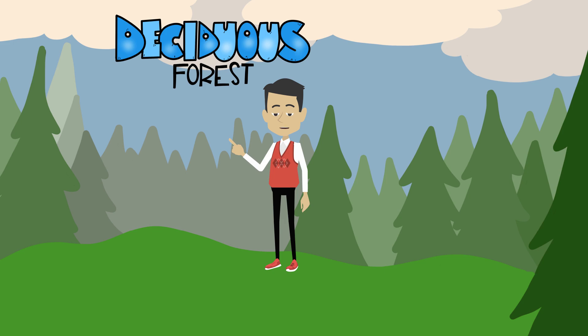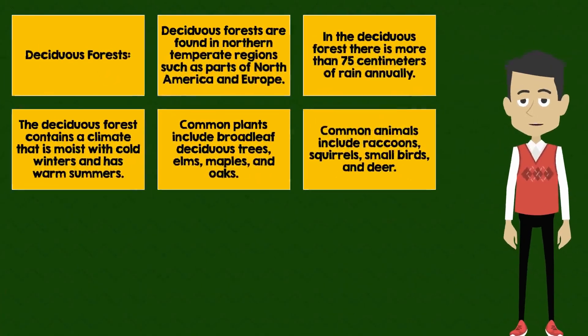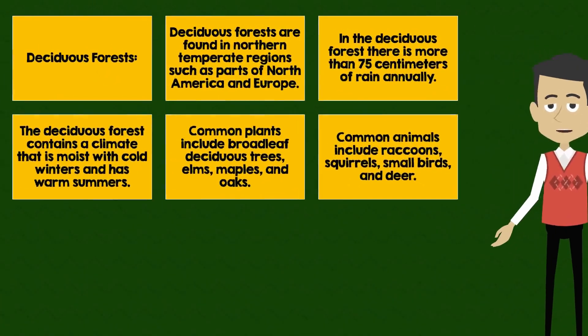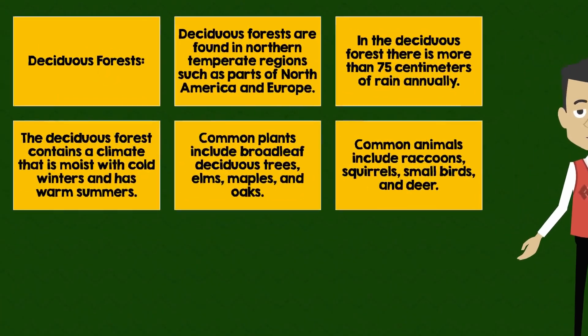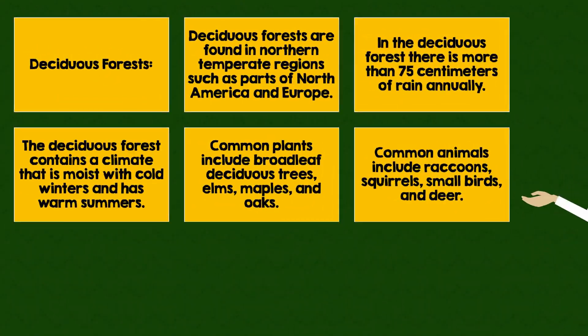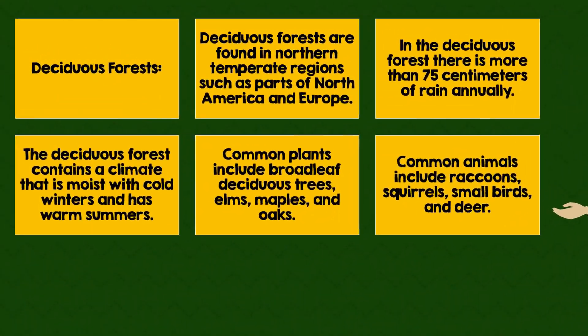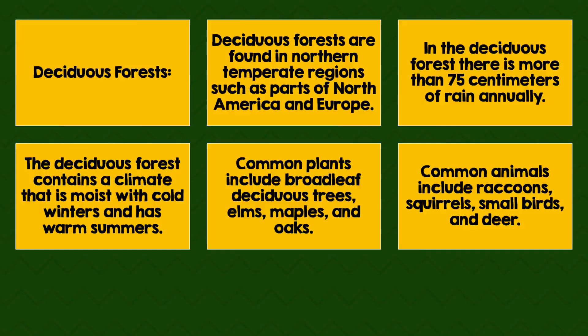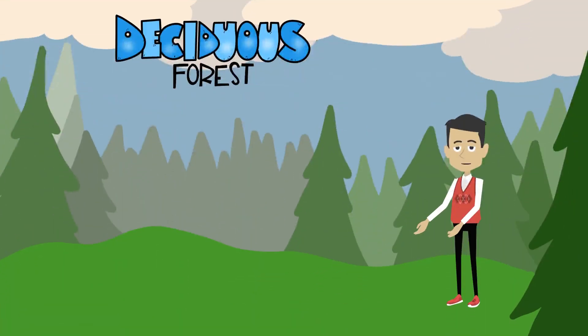Common plants include the broad-leaf deciduous trees, such as elms, maples, and oaks. Common animals that live in the deciduous forest include raccoons, squirrels, small birds, and deer.